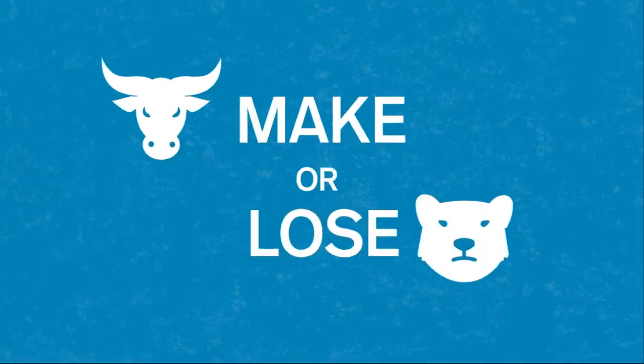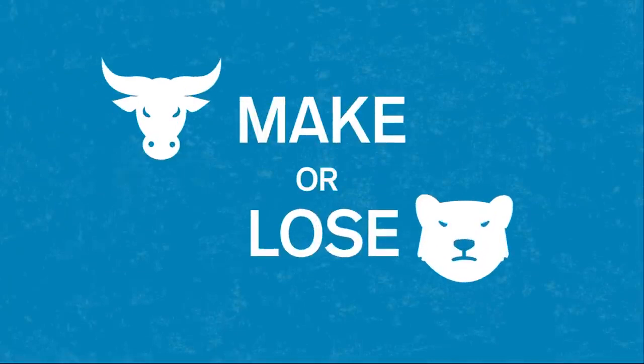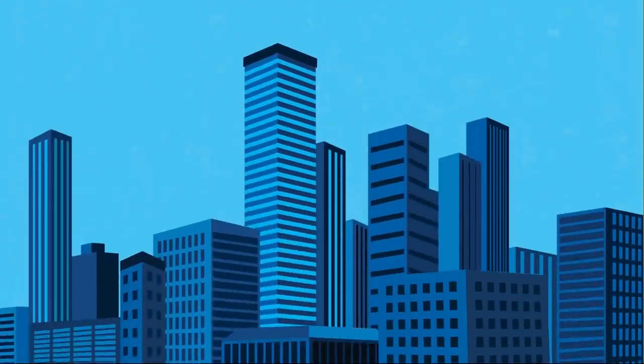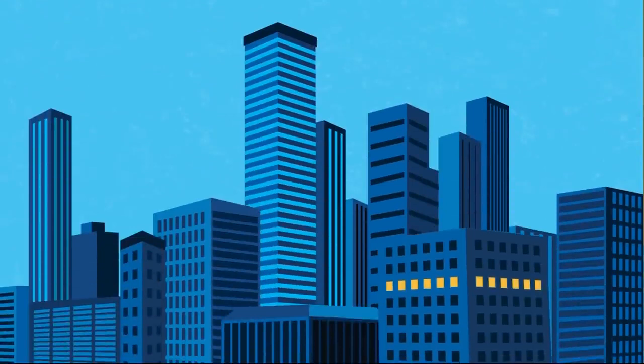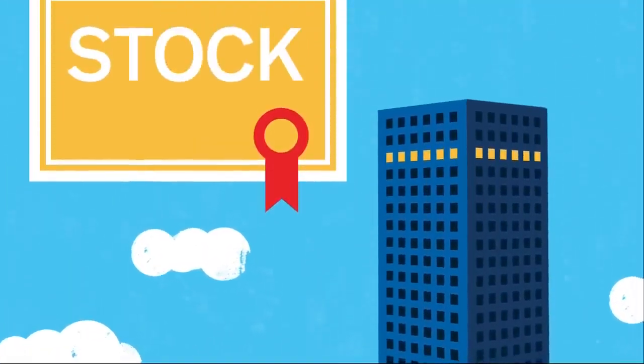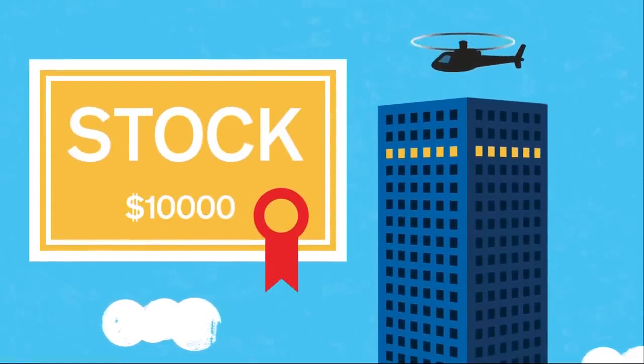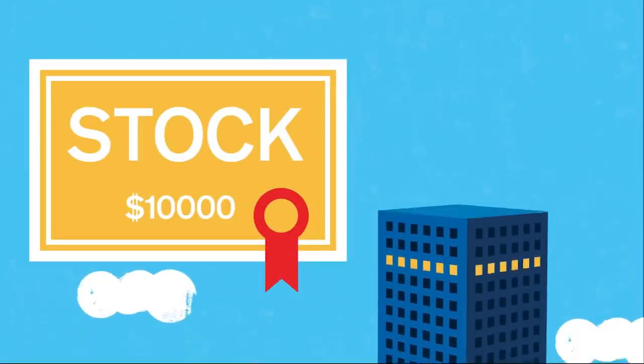There are two ways to make or lose money in the stock market. You see, when you own a stock, you actually own a piece of a company, and as the value of that company increases, the stock price goes up. But if the value of the company goes down, the stock price goes down too.